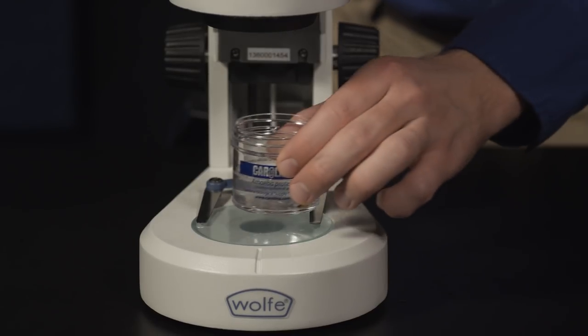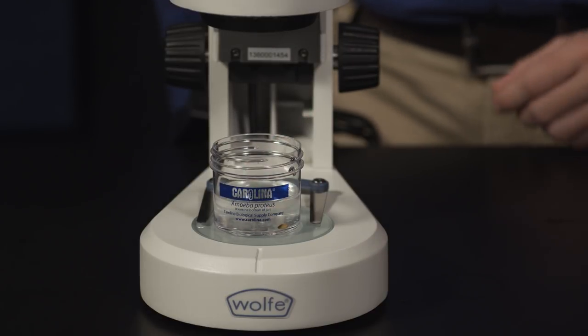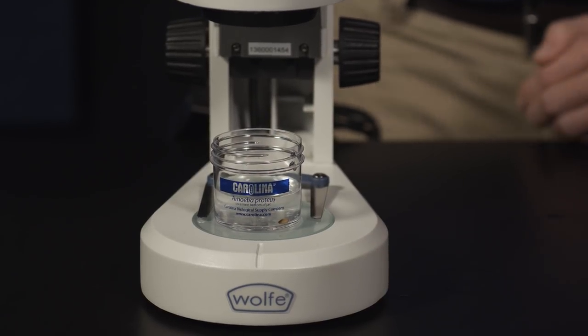Gently place the culture jar onto a stereomicroscope and scan the bottom of the jar. You should be able to see the amoeba slowly moving along the bottom of the jar. Once you have found your amoeba, you can prepare a wet mount slide for more in-depth viewing.